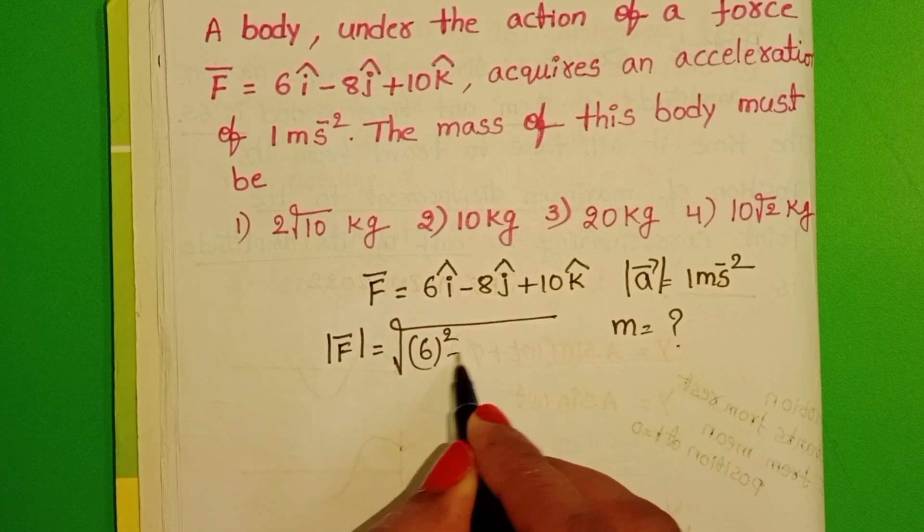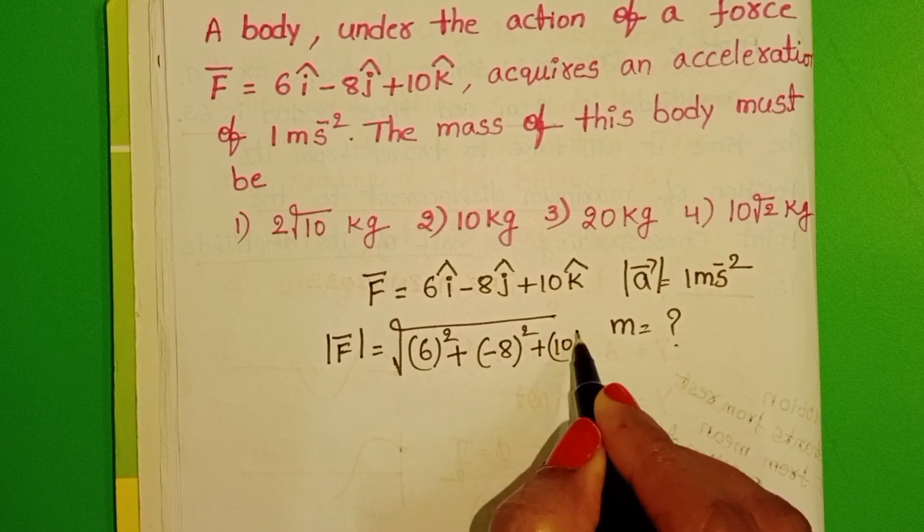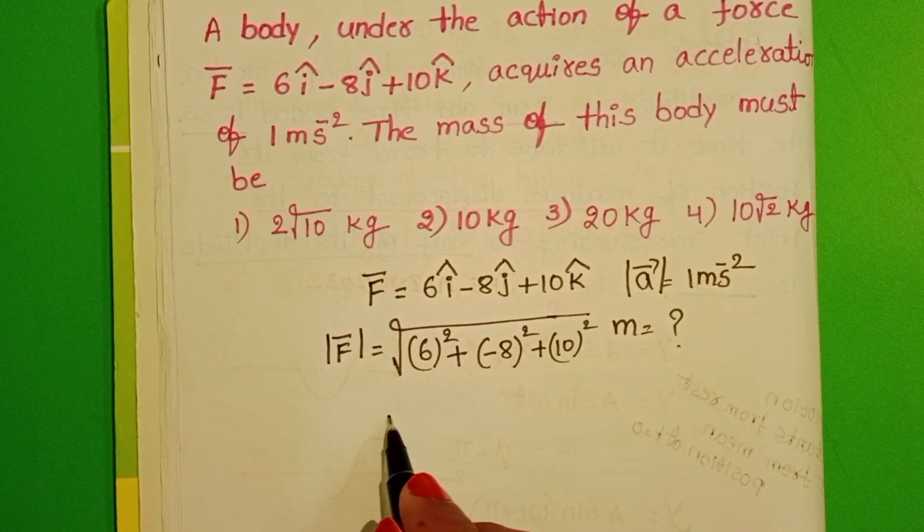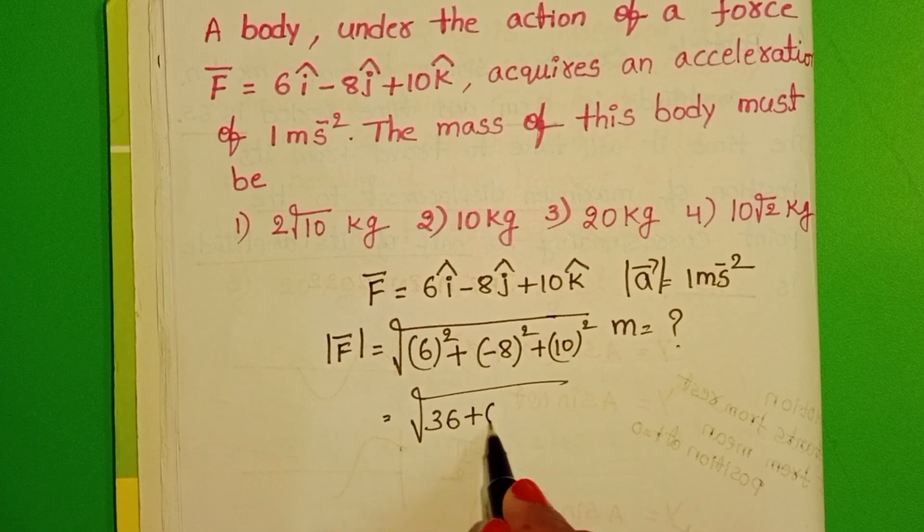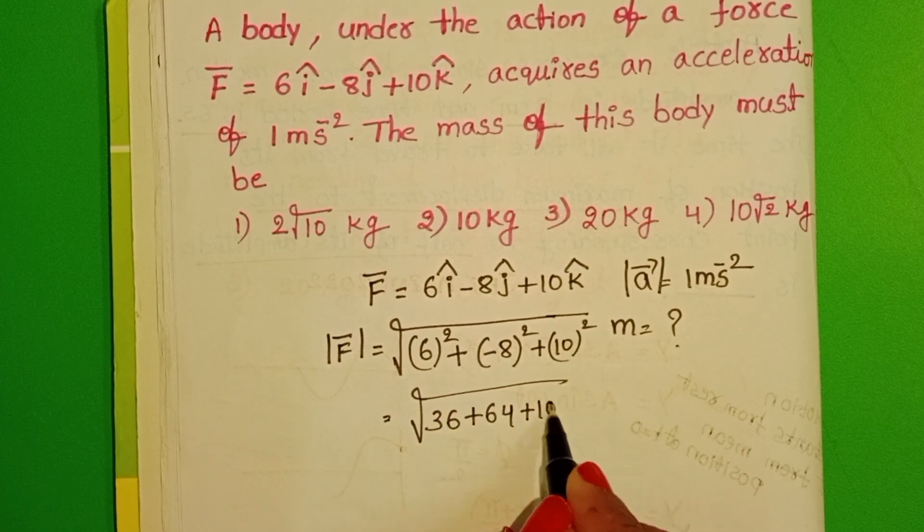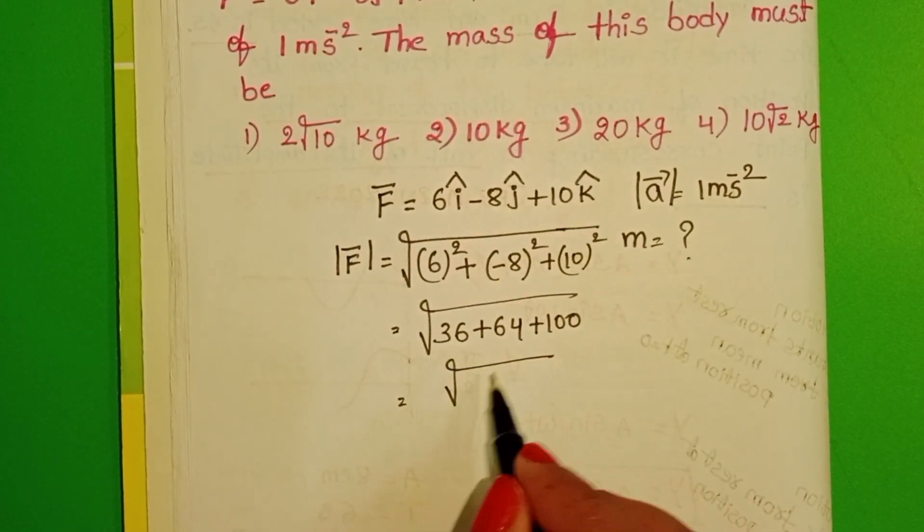6 whole square plus minus 8 whole square plus 10 whole square. Square root of 36 plus 64 plus 100. Square root of 200.